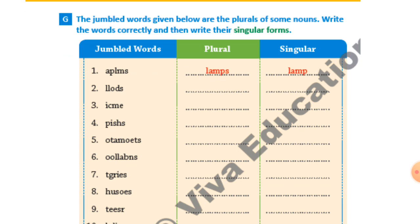The next exercise: The words given below are the plurals of some nouns — they are jumbled. You have to write the correct plural form and then write the singular form. First one: A-P-L-M-S — the answer is 'lamps', and the singular form is 'lamp'.